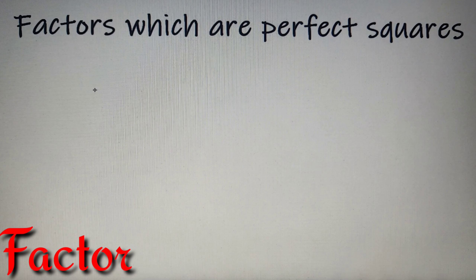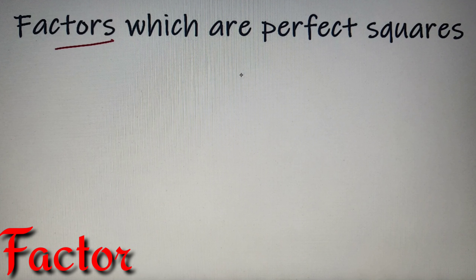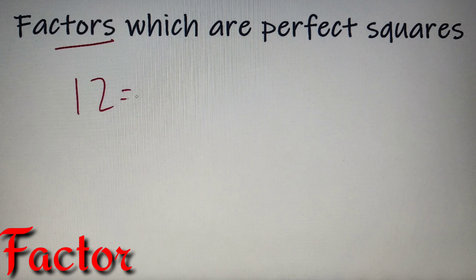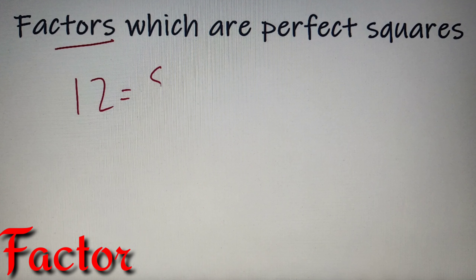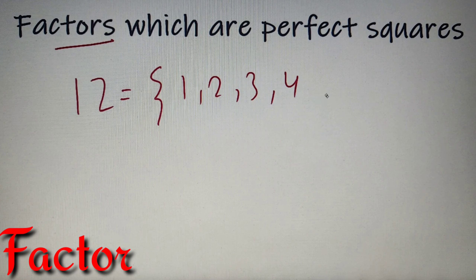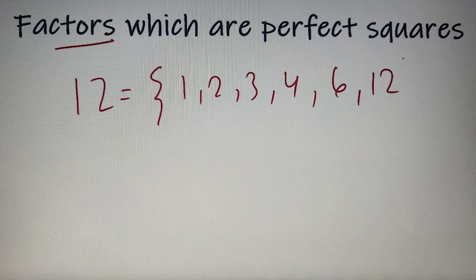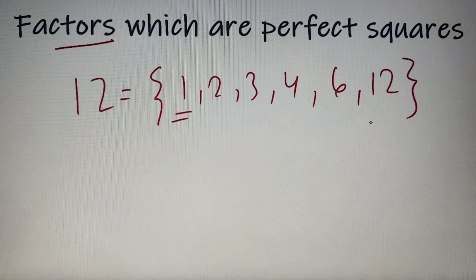Let's do a quick recap of what a factor is. Factors of a number are numbers which are less than or equal to the number and that divide the given number. For example, the factors of 12 will be all the numbers which are less than or equal to 12 and which divide 12. So all the factors of 12 are 1, 2, 3, 4, 6, and 12. The lowest factor of a number can be 1 and the highest factor can be the number itself.